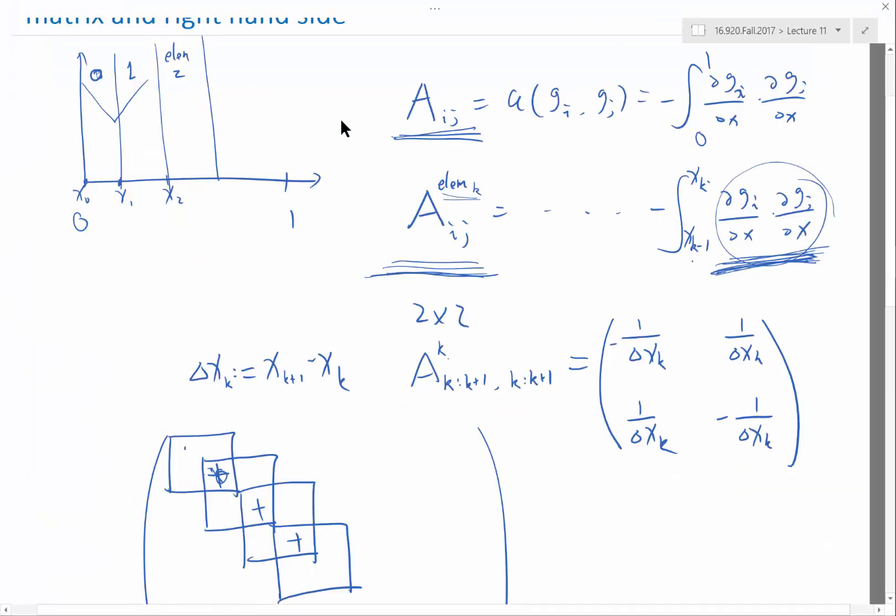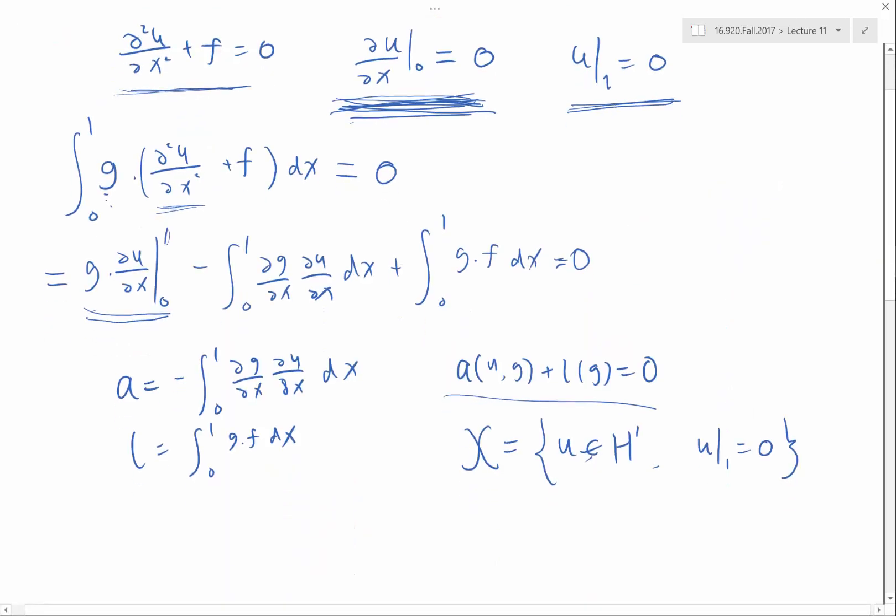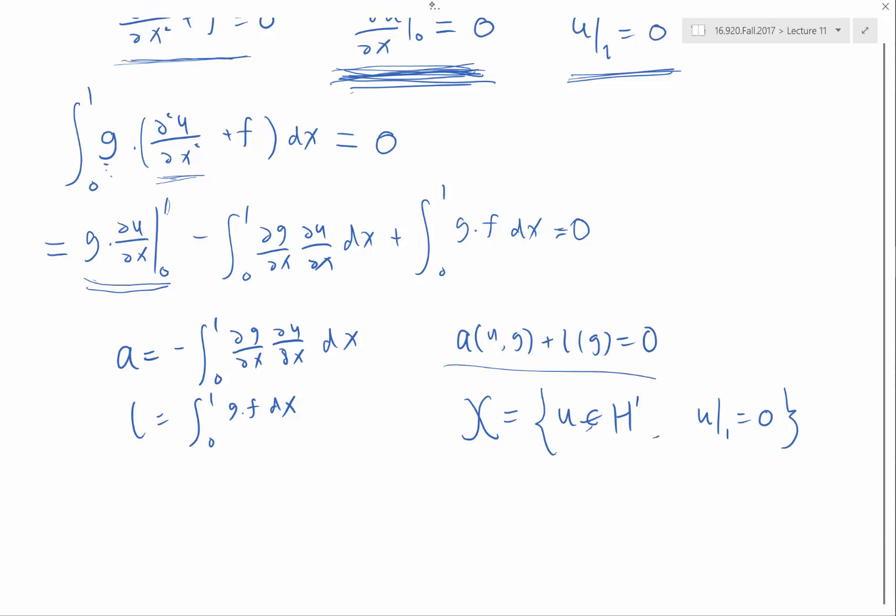Then, if I have a non-zero Neumann boundary condition, let me summarize this zero Neumann boundary condition first.